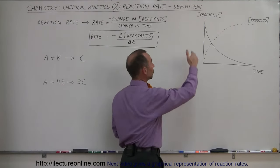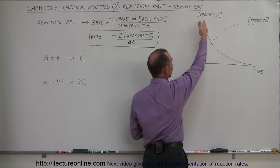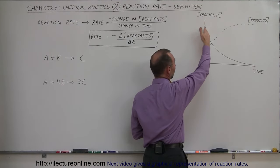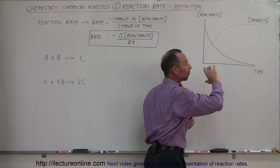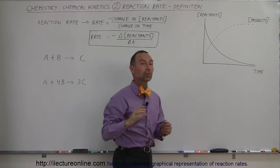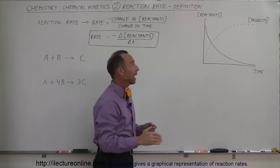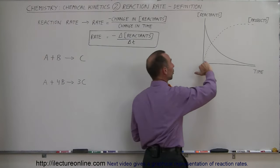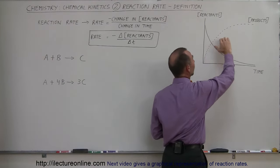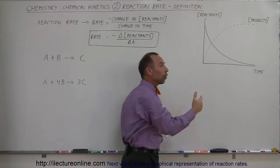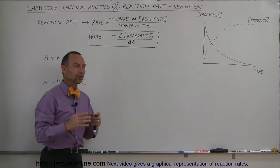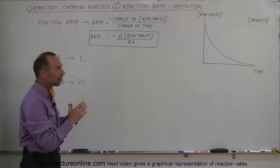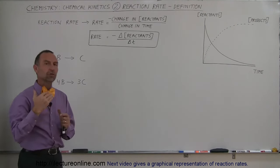As the reactants are consumed, there are less and less reactions, so the reaction becomes slower and slower. And as there are more and more products being formed, the slower the reaction will take place. So it starts out really fast and then it slows down.